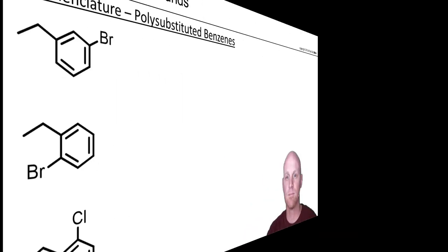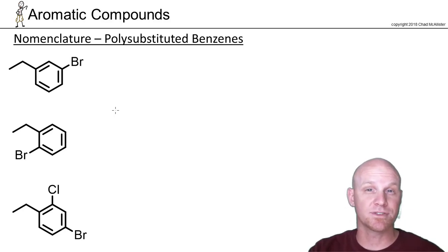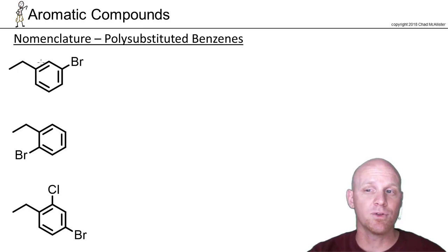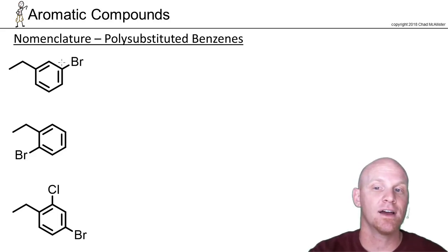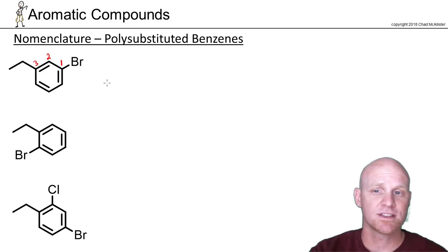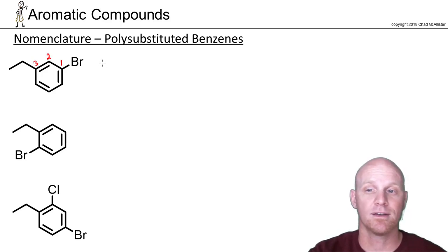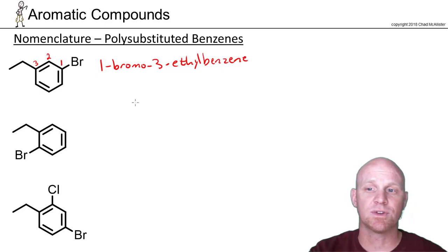Now let's look at polysubstituted benzene rings. For disubstituted rings, we give numerical locators to both substituents and name benzene as the parent chain. With an ethyl and a bromine, when there's a numerical tie, alphabetical order breaks the tie — so bromine gets to be number one. We then number counterclockwise to give the ethyl group the lowest possible number, placing it at three. Named in alphabetical order: 1-bromo-3-ethylbenzene.